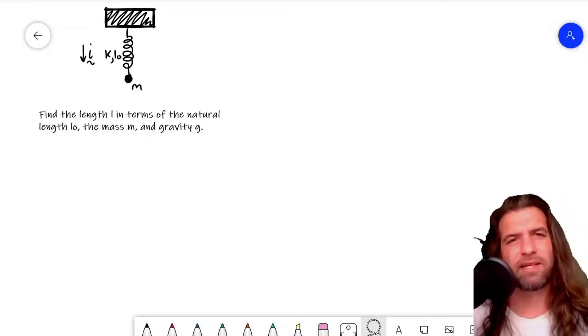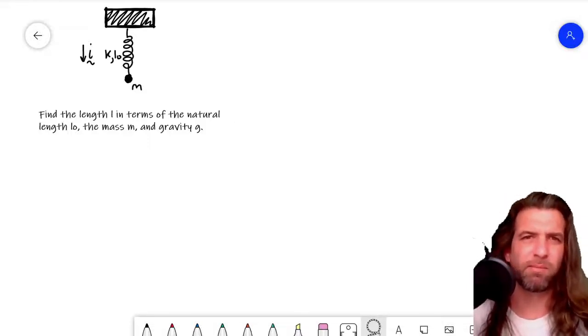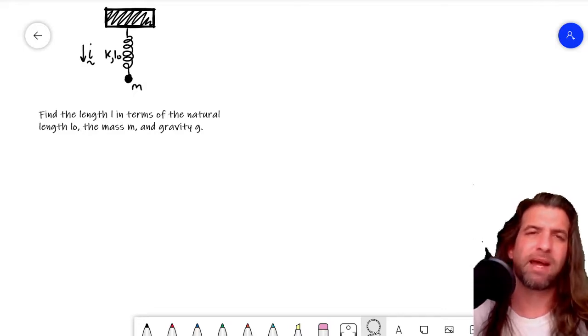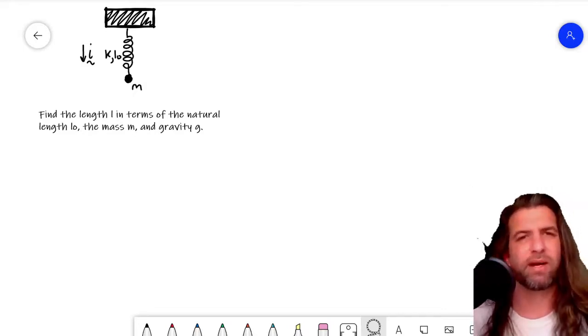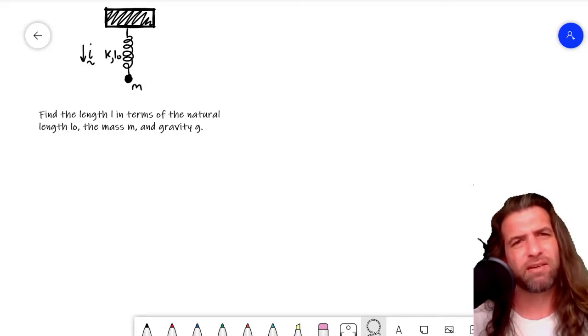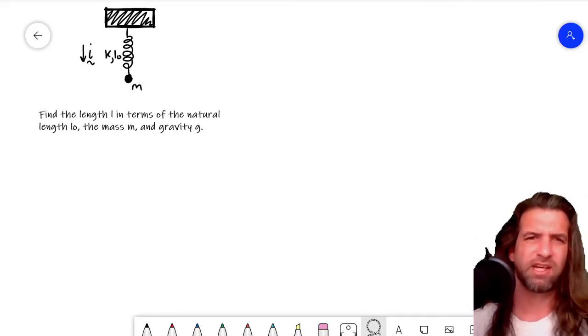Hiya, thanks for joining me. In this lesson we're going to be looking at this following problem. We've got a mass hanging from the ceiling by a spring. I don't know why, but whatever floats your boat. We're to find the length L in terms of the natural length L0 and the mass M and gravity g.